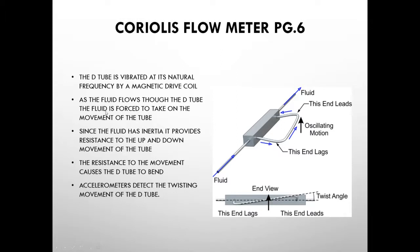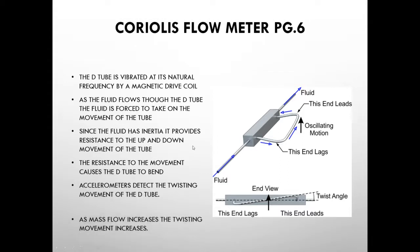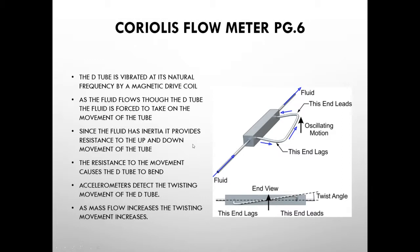The D-tube is vibrated at its natural frequency by a magnetic drive coil. As fluid flows through the D-tube, the fluid is forced to take on the movement of the tube — naturally vibrating at a certain frequency. Since that fluid has inertia, it provides resistance to the vibration. The resistance causes the D-tube to bend or deflect, and accelerometers detect the twisting movement. As mass flow increases, the twisting movement increases. A lower-density medium like gas will cause less twist than a more dense material like a liquid flowing through.